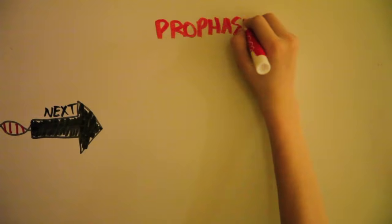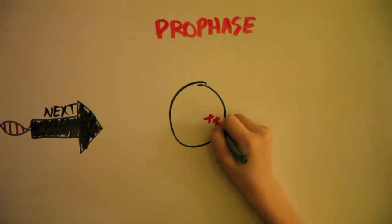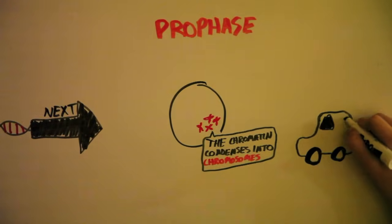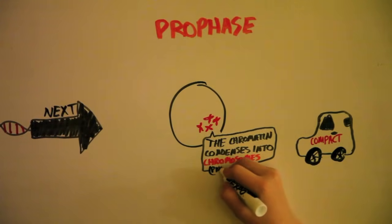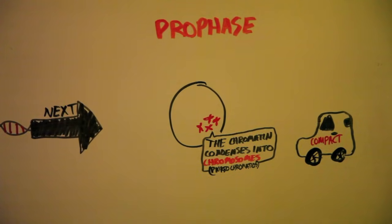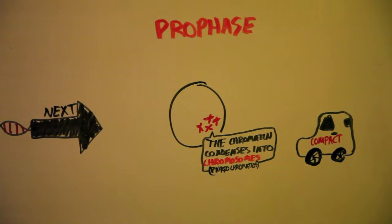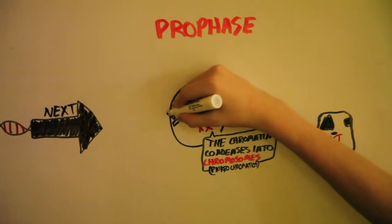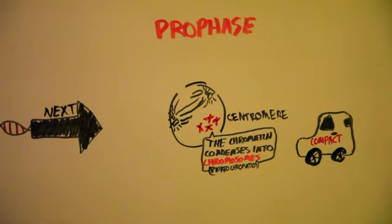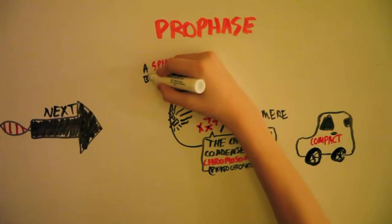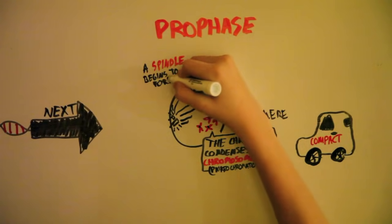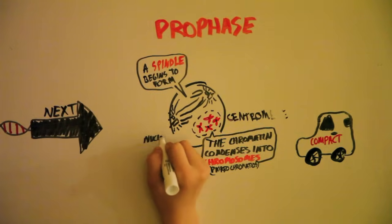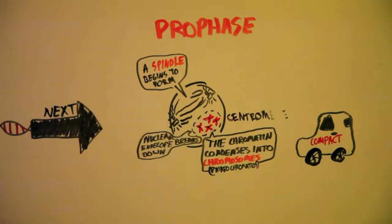Next, in prophase, the chromatin condenses into chromosomes, a more organized and compact form of DNA. The chromosomes, paired chromatids, are just two sets of identical DNA connected at the center by the centromere. The centrioles separate, moving to opposite sides of the cell. In between them, a spindle begins to form. The spindle is a fiber that comes from the centrioles. In prophase, the nuclear envelope also breaks down.